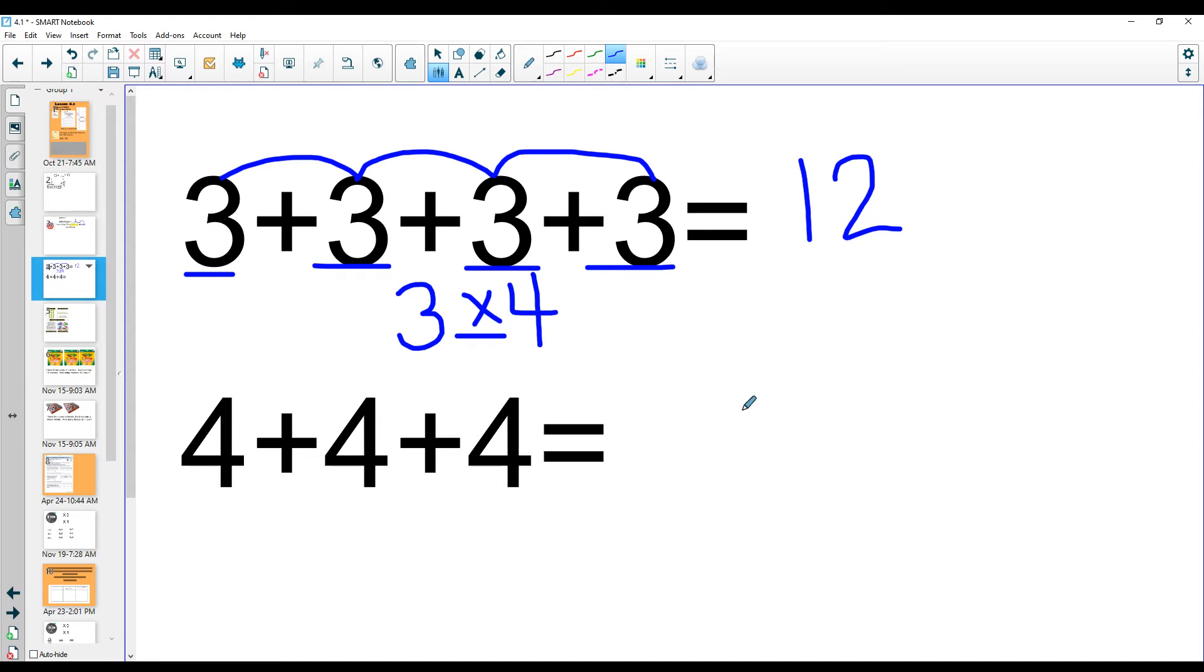Well look at this one, we have four plus four equals eight. Eight plus four equals twelve. How many times did you add four? You added four three times. Look, these are the turnaround fact of each other. Three times four equals twelve, and four times three equals twelve.